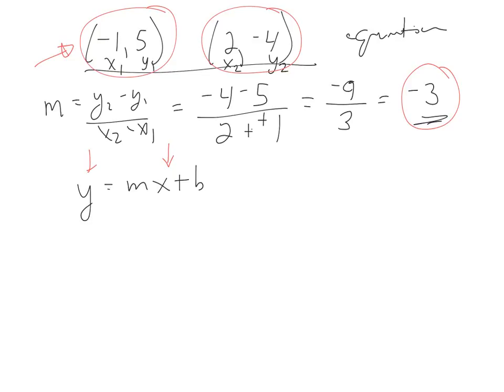So y is 5 equals slope negative 3 times the x value, negative 1, plus b. So 5 equals negative 3 times negative 1 is positive 3, plus b. Subtract 3 from both sides. So 5 take away 3 is 2.